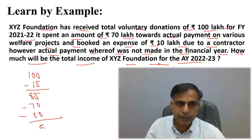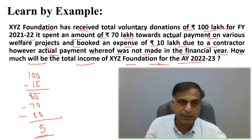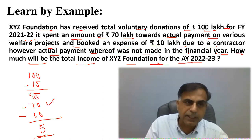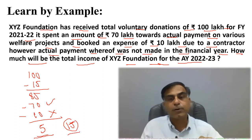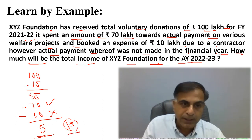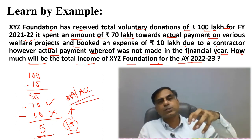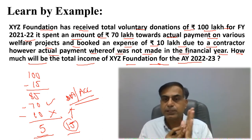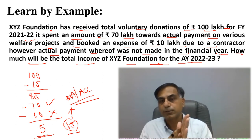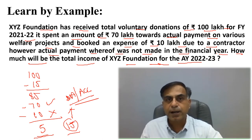With this amendment, the Rs. 70 lakh will be allowed because it is actually paid, but the Rs. 10 lakh due to the contractor will not be allowed. As a result, the total income of the trust will increase by Rs. 10 lakh, becoming Rs. 15 lakh. The trust must now be very cautious when applying for deemed application or accumulation, ensuring that the effect of this explanation is duly given in computing the final total income. I hope this example gives you clarity on how to give effect to this amendment.